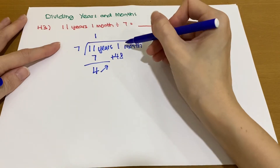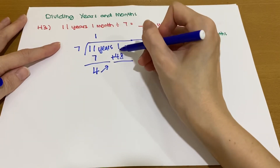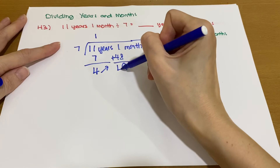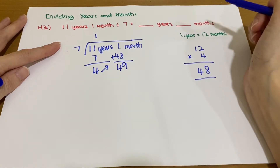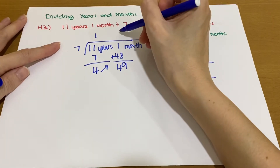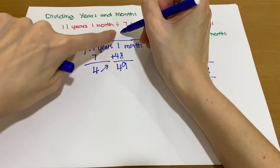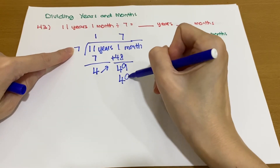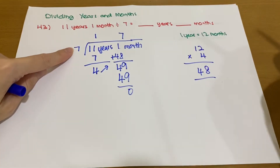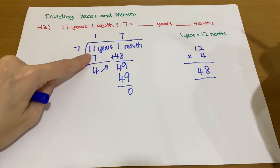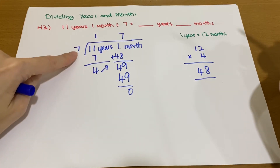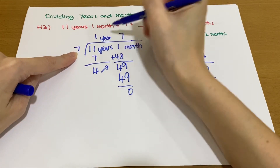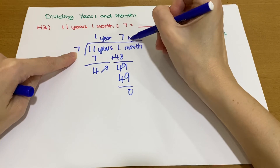So we have 49 months total: 7 × 7 = 49, balance 0. Therefore 11 years 1 month divided by 7 gives us 1 year and 7 months.